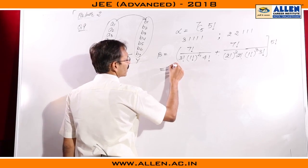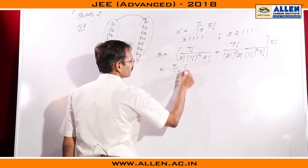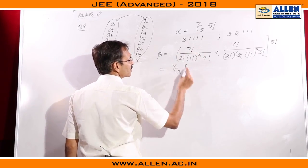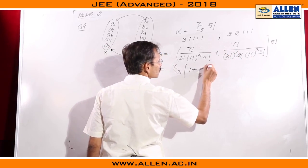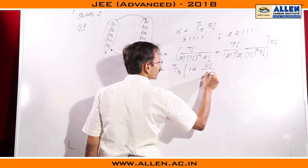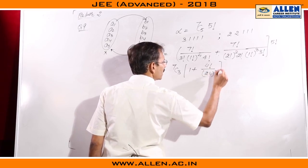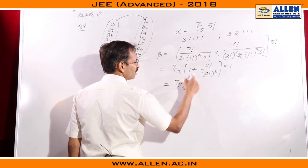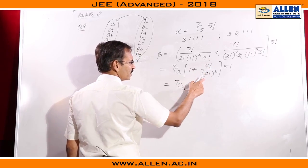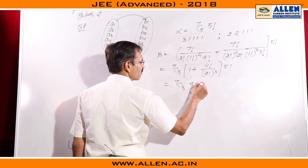Let us simplify it. We can take 7C3 as common. This is 7C3 plus 7C3 is gone, so it is 4 factorial over 2 factorial cube multiplied by 5 factorial. So it is 7C3, this is 24 by 8, so overall 4 into 5 factorial.